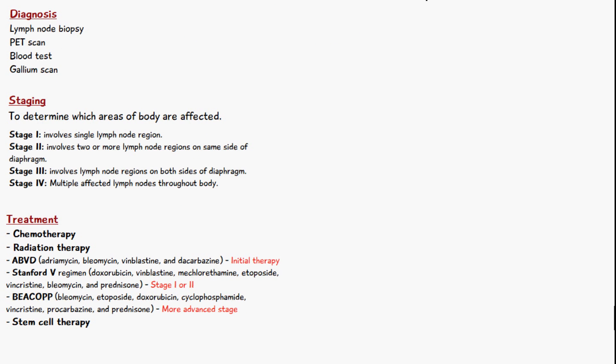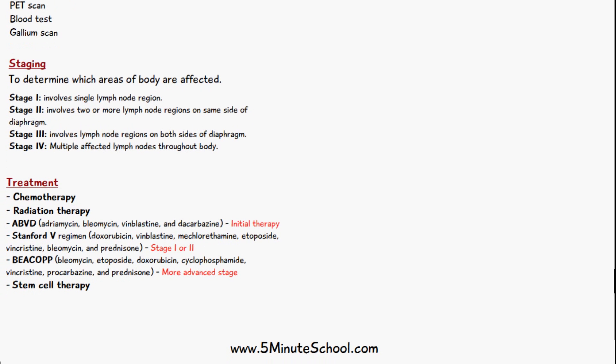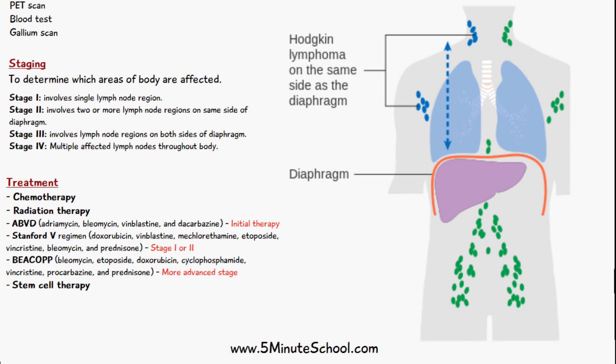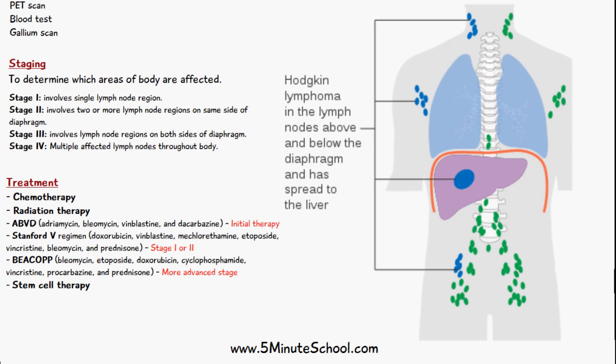All Hodgkin's lymphomas and non-Hodgkin's lymphomas are staged to determine which areas of the body are affected. Stage one involves a single lymph node region. Stage two involves two or more lymph node regions on the same side of the diaphragm. Stage three involves lymph node regions on both sides of the diaphragm. Stage four involves multiple affected lymph nodes throughout the body.